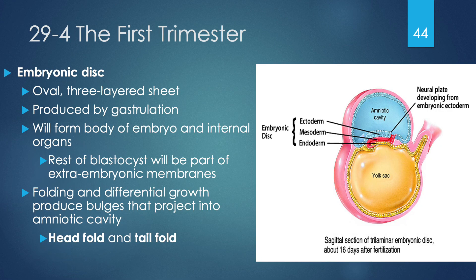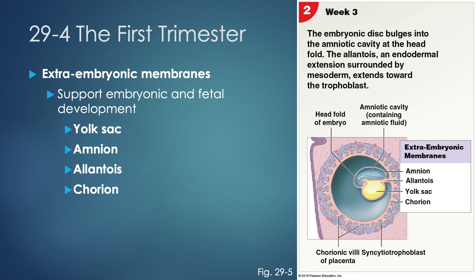The embryonic disc is the three-layered oval sheet produced by gastrulation that forms the body of the embryo as well as all internal organs. The rest of the blastocyst becomes part of the extra-embryonic membranes — membranes outside the developing human. Folding and differential growth produces bulges projecting into the amniotic cavity — a head fold at the cranial end and a tail fold at the caudal end. The extra-embryonic membranes that develop in week three have four components: the yolk sac, the amnion, the allantois, and the chorion.